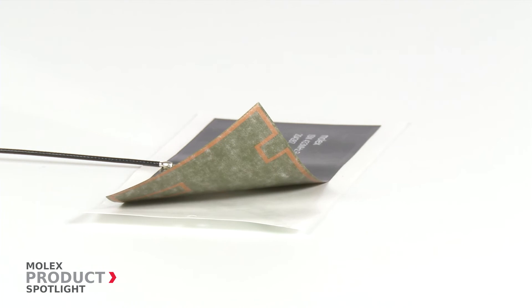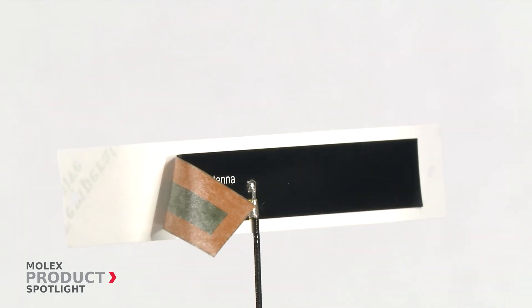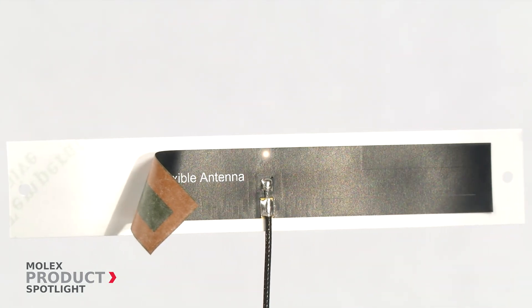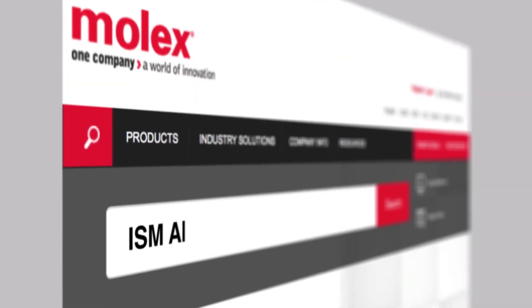All ISM antennas include adhesive on the reverse side allowing for instant application to the device chassis. More information at molex.com.